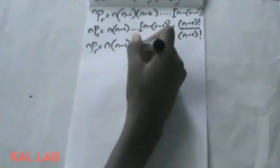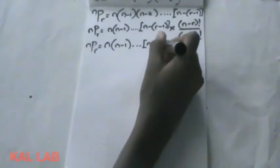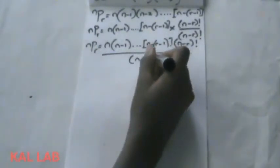So let's look at it. nPr, this would give n, n minus 1, down to n minus r minus 1, times n minus r factorial over n minus r factorial. Now, this is it.